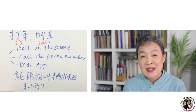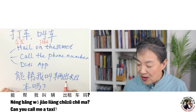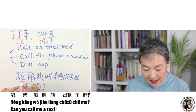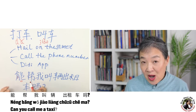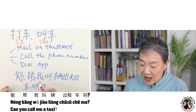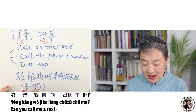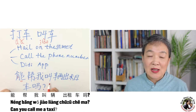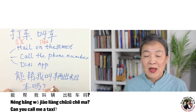So how to ask for help? Let's learn this sentence: 能帮我叫出租车吗? 能 is like 'could you' in English, 帮 means help — 'Could you help me call a taxi?' The hotel concierge or restaurant front desk will likely say 没问题.